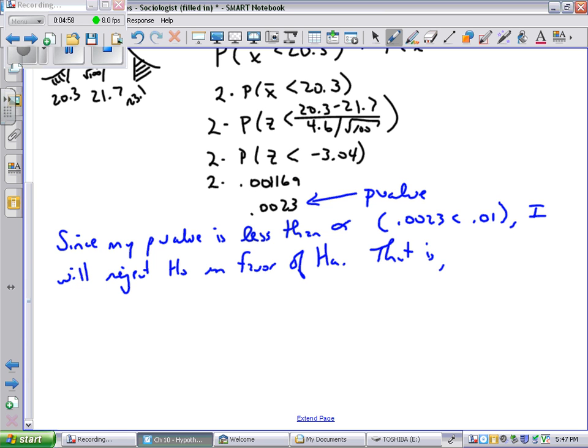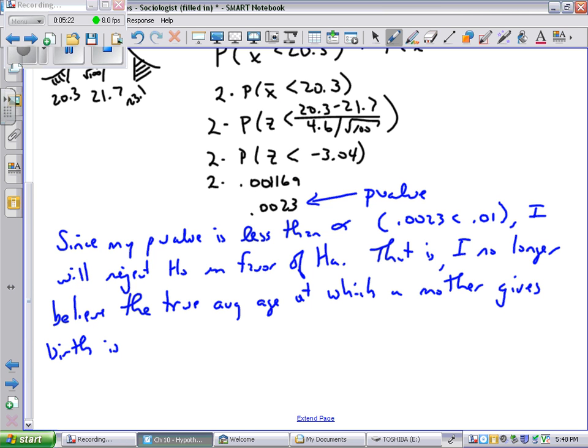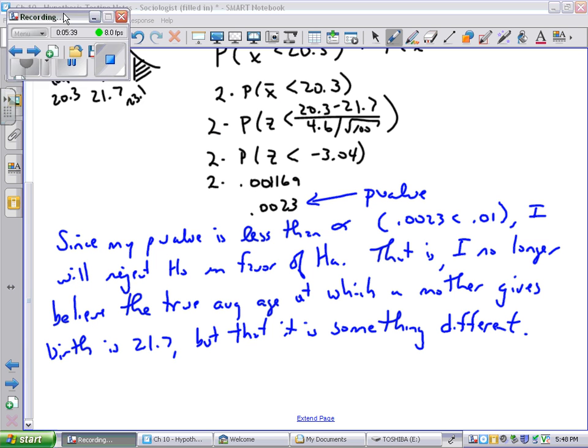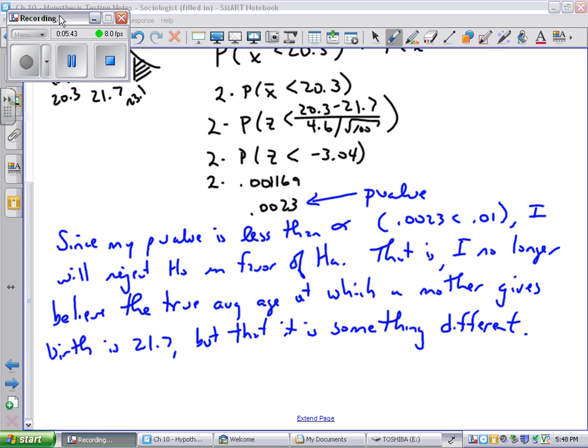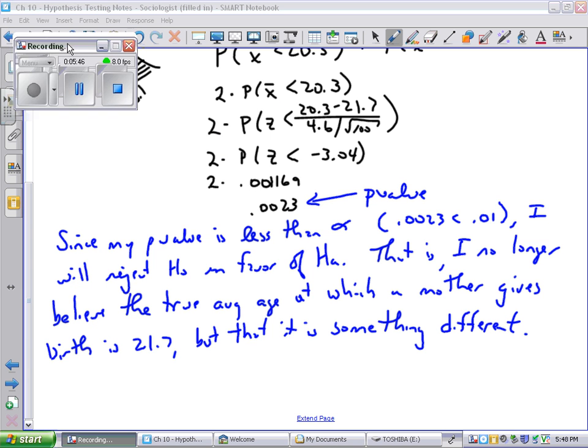I will reject H0 in favor of HA. That is, I no longer believe, now I put it in context, the true average age at which a mother gives birth is 21.7, but that it is something different. If you need to pause the video so you can catch up and write, of course, feel free to do that.